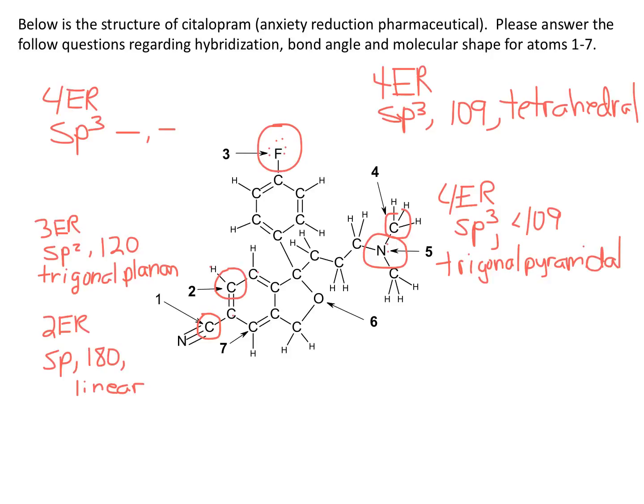If I turn to oxygen number six, it only has two bonds, so I'm going to need to add two lone pairs. Now I have a center with four electron regions. The hybridization is sp3. The bond angle is 109, but once again it's crunched down a little bit because of the lone pairs, and the shape would be bent.